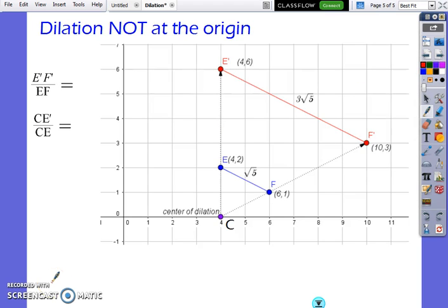Okay, now let's look at a dilation not at the origin. First, I want you to look at the coordinates just like we did in the previous example. Notice that there is no relationship and we do not see our scale factor in those coordinates. But we can observe the scale factor by looking at the corresponding side lengths or by the vector from the center of dilation to corresponding vertices.